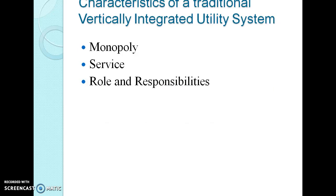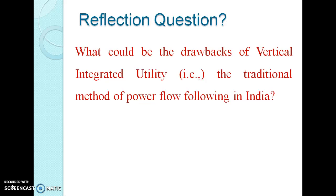The characteristics of the traditionally vertically integrated utility system are: first, they are monopoly in structure; second, they are service-oriented towards the consumer; and third, regarding roles and responsibilities — only the local electric utility can produce, move, or sell commercial electric power within its service territory. Since there are no other power producers, the utility must provide service to all consumers in its service territory, not just those that would be profitable. The utility's business and operating practices must conform to guidelines and rules set by government regulators, and the utility is assured a fair return on its investment if it conforms to regulatory guidelines and practices.